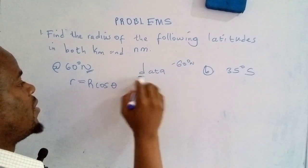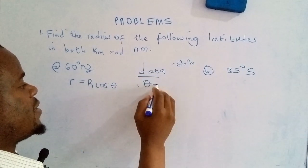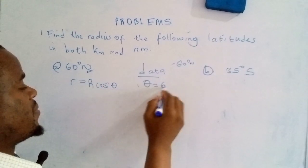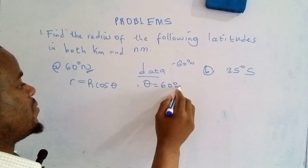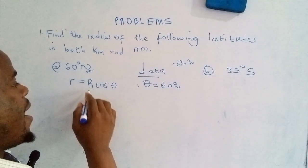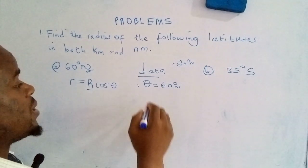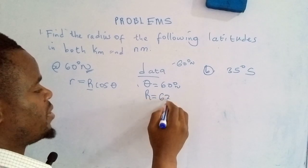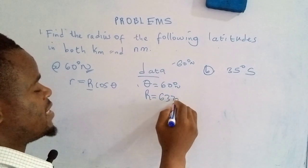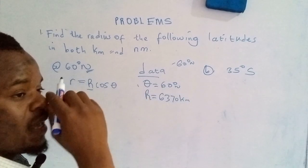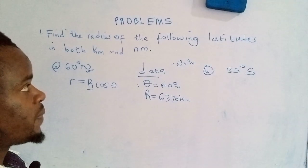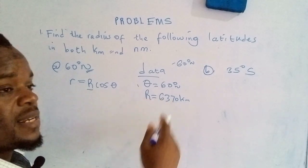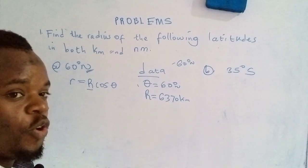Data. Theta is actually the latitude we are looking at, so that's 60 degrees north. Then R is actually the radius of the Earth. The radius of the Earth is given by 6370 kilometers.